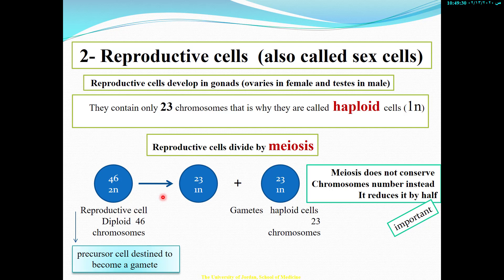However, for sex cells we need meiosis. Meiosis does not preserve the number of chromosomes; instead it splits the number of chromosomes in half. The daughter cells have only one copy of each chromosome. We split homologous chromosomes and put one copy of each chromosome in one cell, giving us 23 chromosomes in each cell. So meiosis does not conserve chromosome number — instead it reduces it by half. This is the way we increase the number of cells and make them suitable for fertilization, for example a sperm fertilizing an egg.